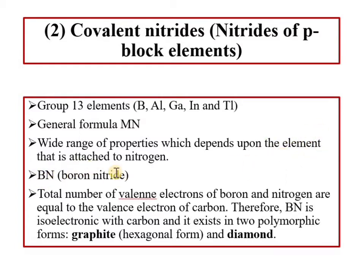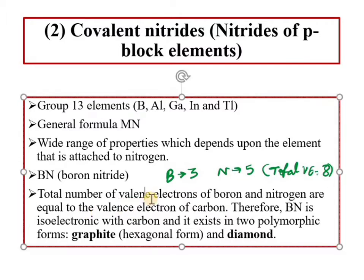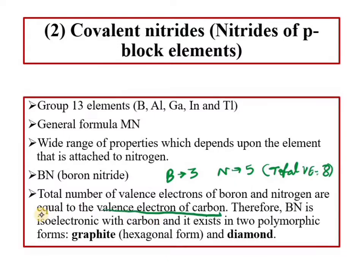An example is BN, boron nitride. If we look at boron's valence electrons, there are 3, and nitrogen has 5, giving a total of 8 valence electrons — the same as carbon-carbon bonding. Therefore, BN is isoelectronic with carbon, and it exists in two polymorphic forms: one hexagonal form and one diamond form.